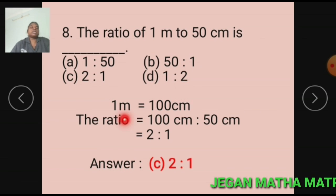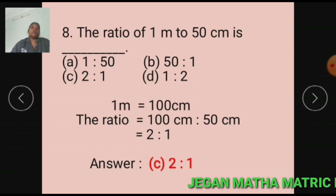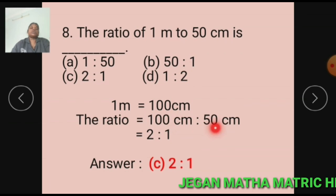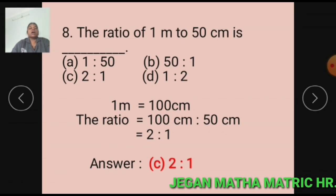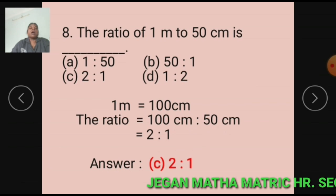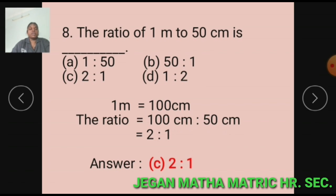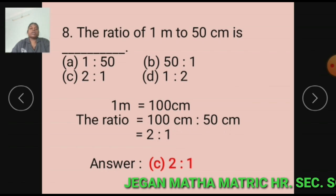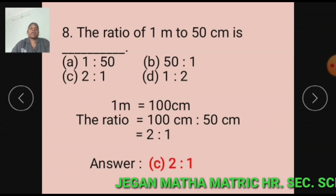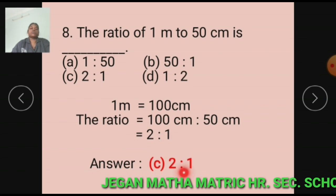1 meter equals 100 cm. The ratio of 100 cm to 50 cm equals 2 is to 1. 100 and 50 are simplified by 50, so the ratio equals 2 is to 1. The answer is Option C: 2 is to 1.